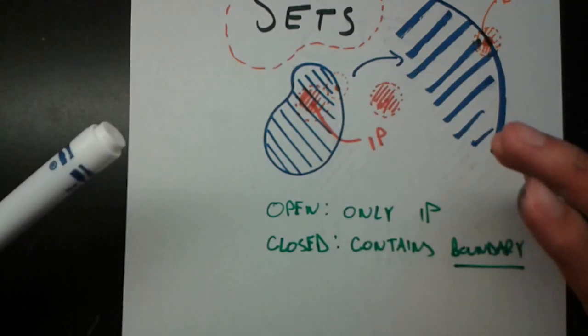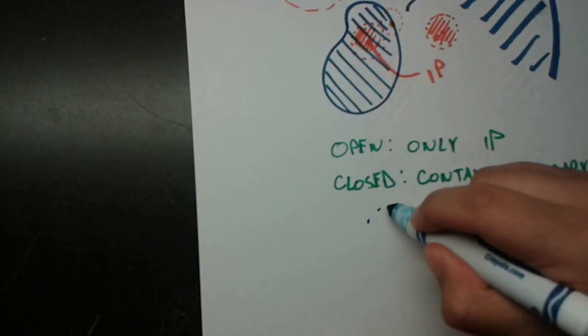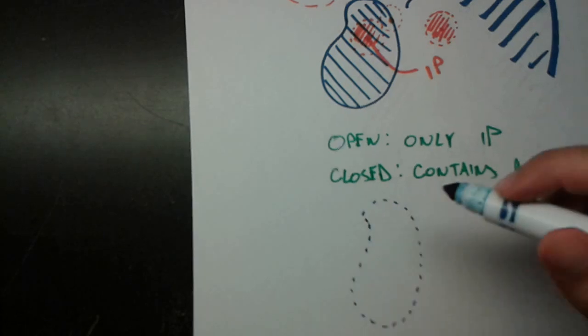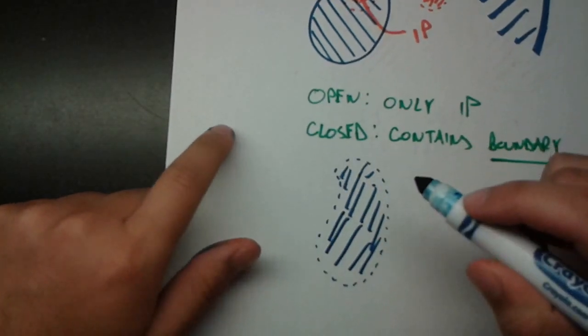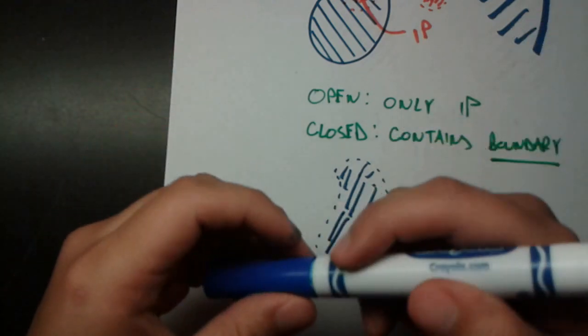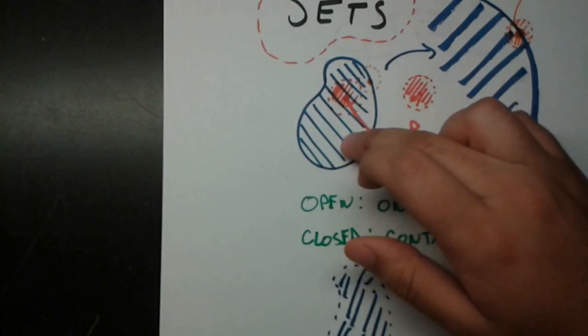Now, a set can have a boundary without containing its boundary. So if we draw the same set, I'm going to try to draw it as close as possible, except I make it open. And that means that it contains all of the inside, but not its boundary. It still has a boundary, but it just does not contain it. So it's not part of the set. So this set does not have any boundary points. So this is open, and this set is closed.